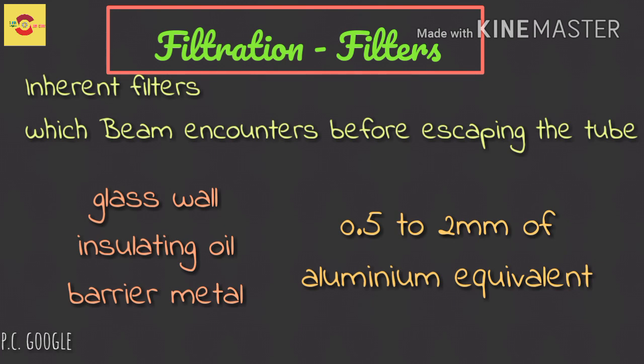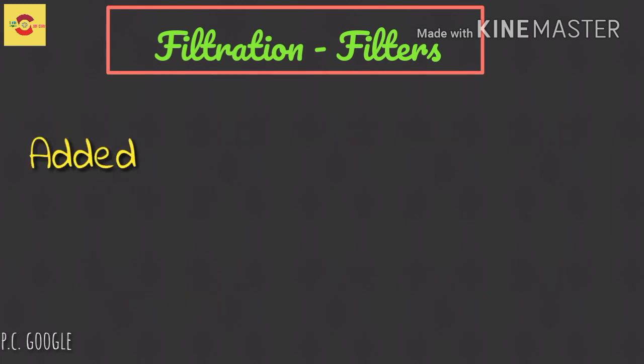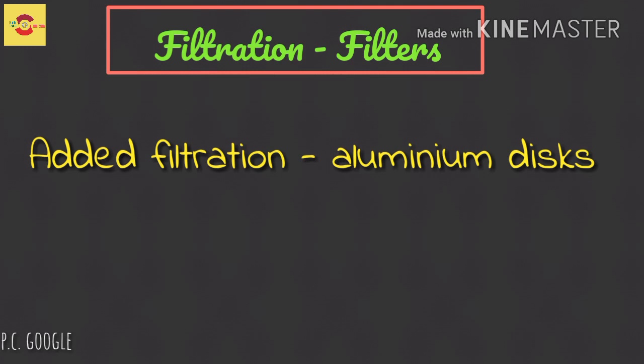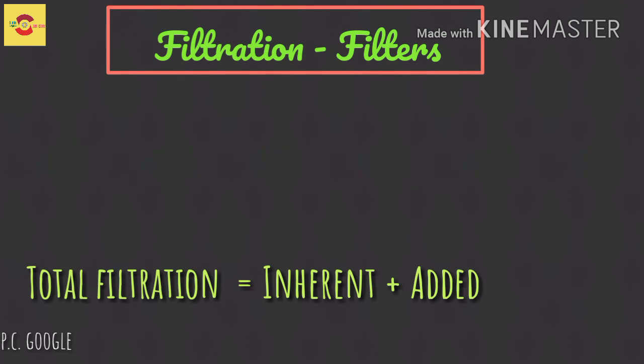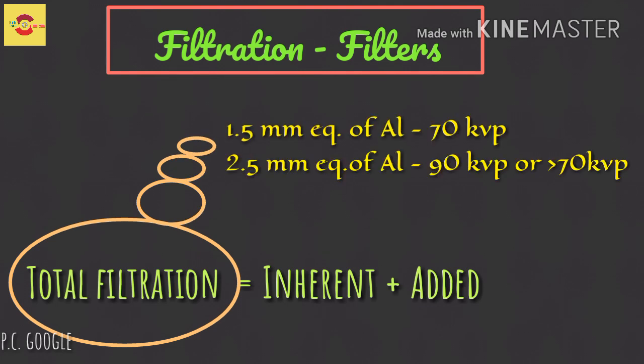Added filtration is supplied in the form of aluminum discs placed over the port in the head of the x-ray machine. Total filtration is the sum of inherent filtration and added filtration. Government regulations require total filtration to be equivalent to 1.5mm of aluminum for machines operating at 70 kVp and 2.5mm of aluminum equivalent for machines operating at higher voltages.